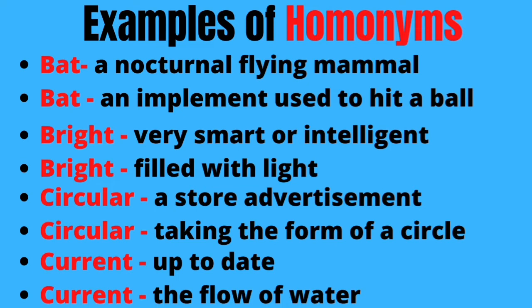Another example is 'bat' — a nocturnal flying mammal that sleeps in a cave and only comes out at night, and bat is also something you use to hit a ball. If you're playing cricket, the bat is what you use to hit the ball. The other example is 'bright': when someone is intelligent or smart, you say they're bright, and also when a light fills the room, you say the light is bright.